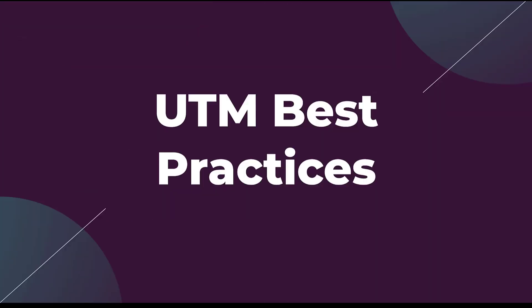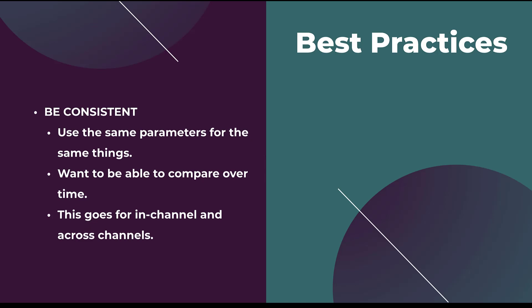So now that we've gone through all of the parameters themselves, I want to go through the three main best practices that I like to keep in mind. The first is to be consistent — use the same parameters for the same things. Source is always where they came from, medium is how they got there, campaign is the campaign name, term is the targeting I used, and content is the ad creative I used. That's always how I use UTM parameters unless a client has specific needs otherwise, because it's easy to follow since it's logical, and it'll be consistent no matter where I'm setting things up or who I'm setting them up for.